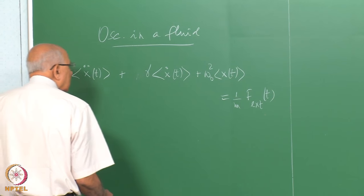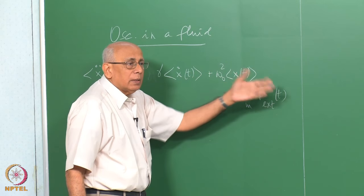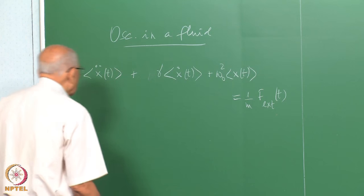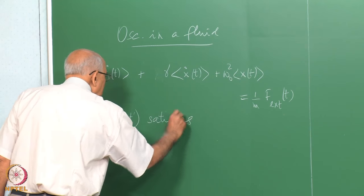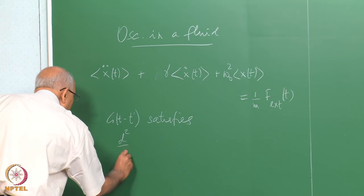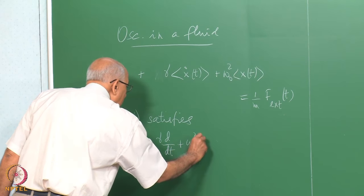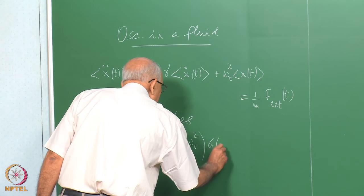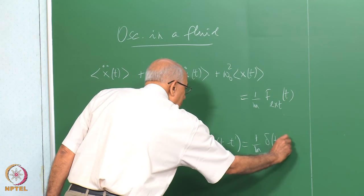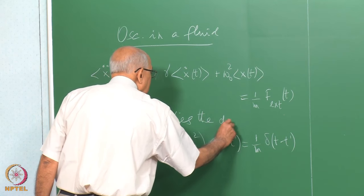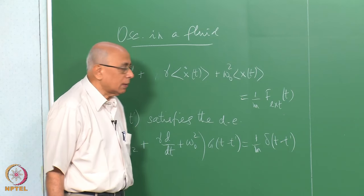The Green's function method says that x(t) is an integral over the inhomogeneous term up to time t, multiplied by the Green's function. The Green's function g(t − t′) satisfies the differential equation: (d²/dt² + γ·d/dt + ω₀²) acting on g(t − t′) equals (1/m)·δ(t − t′). So you have the same differential operator on the left and a delta function on the right.